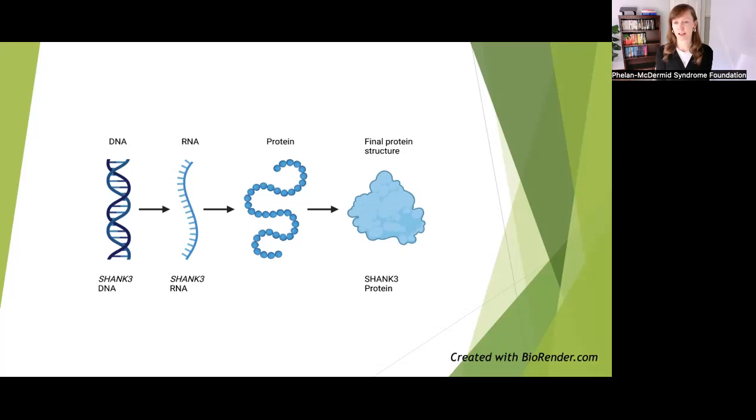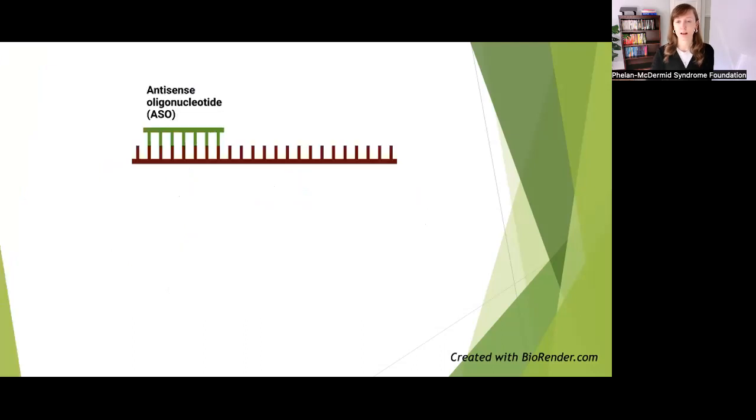Antisense oligonucleotides, or ASOs, are usually designed to target the intermediate step, RNA. ASOs are synthetic structures that can bind to RNA and modify it. Antisense refers to the complementary sequence, and oligonucleotide is a short stretch of building blocks of genetic material.